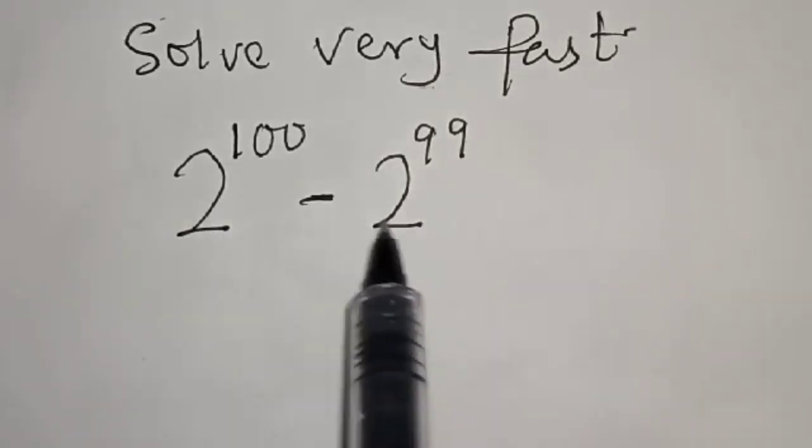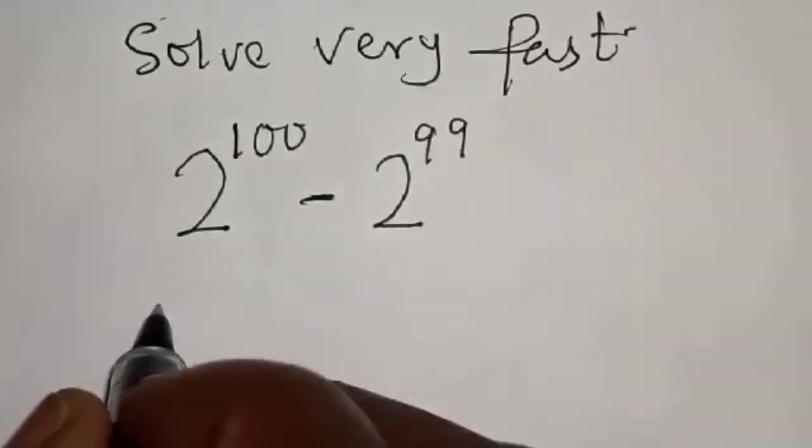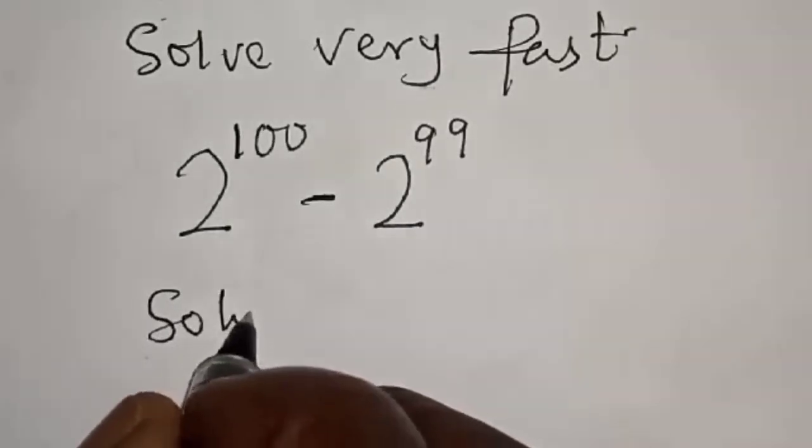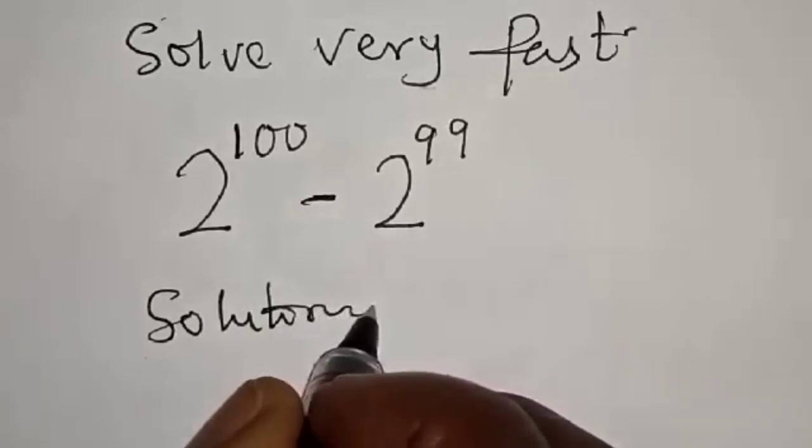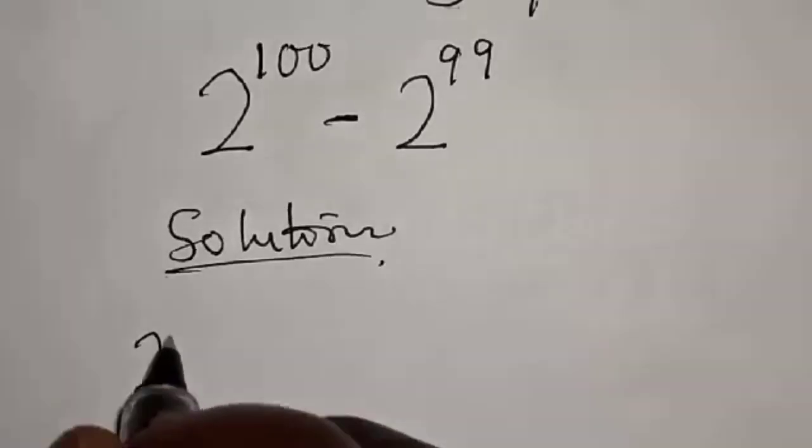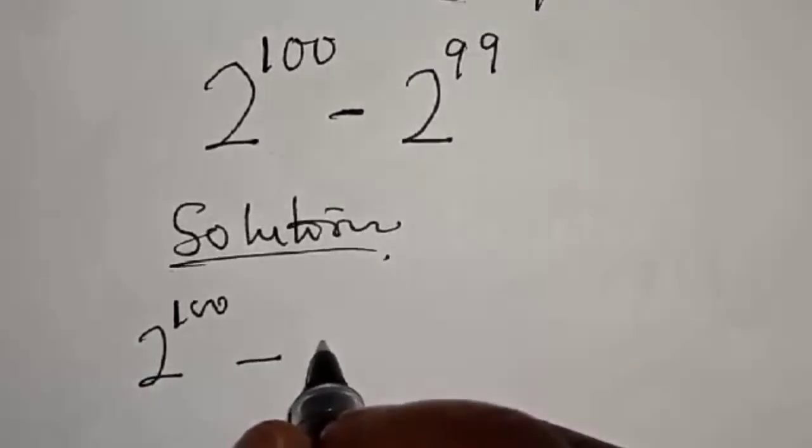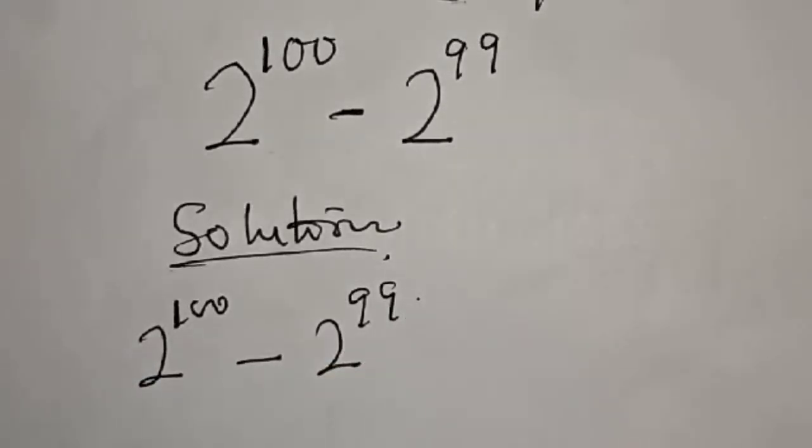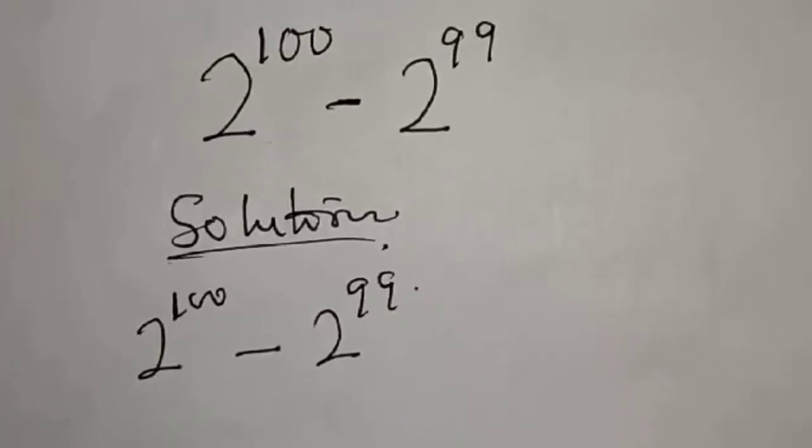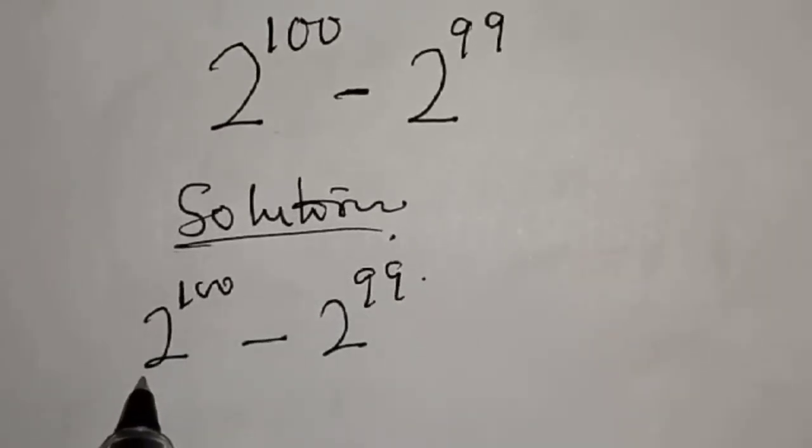Solution: 2 raised to power 100 minus 2 raised to power 99. We know that 100 minus 99 is equal to 1, therefore let's try and look at how we can manipulate this.